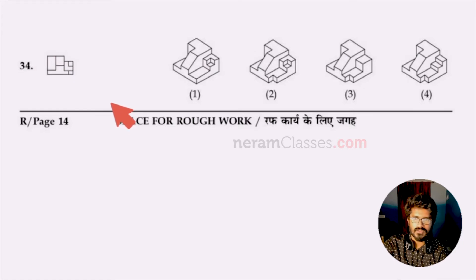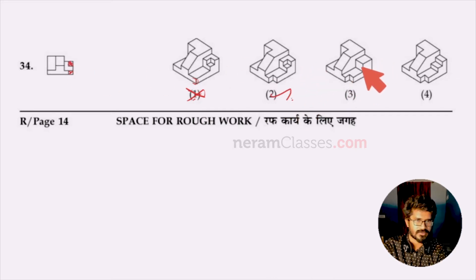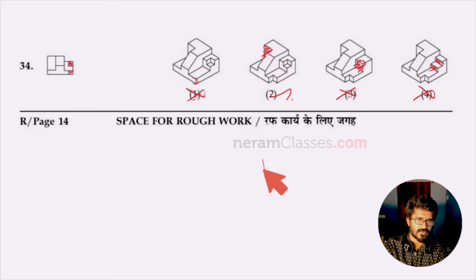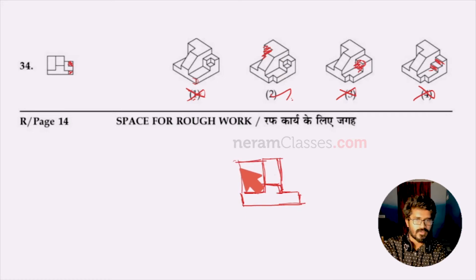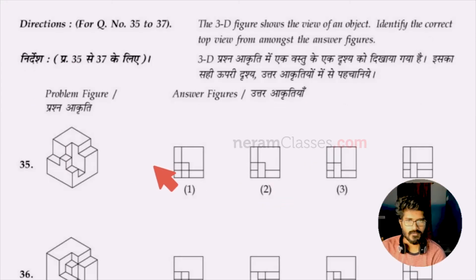For question 34, option one is wrong because it has a small square that isn't there in the plain view. Option two might be the answer — it's matching. Option three is wrong because it lacks that small portion. Option four is wrong because it has a steps-like shape while the question has an L-shape. Sketching: a tall rectangle, a T-shape attached at the bottom, an L here, and a square — matching with option two. Option two is the right answer.